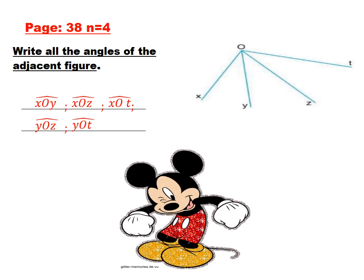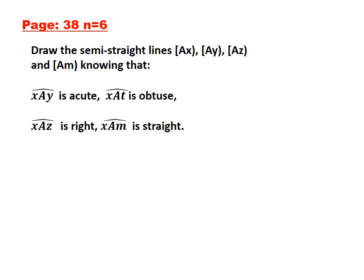Then YOT, and at the end ZOT. Let's move to number 6 on page 38: draw the semi-straight lines AX, AY, AZ, and AM knowing that XAY is acute, XAT is obtuse, XAZ is right, and XAM is straight.